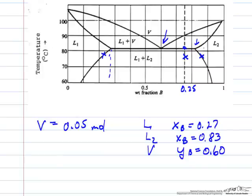Now we need to determine the amounts of these phases. We've determined the composition, so I might call this XB in phase 1 and in phase 2, and then YB is in the vapor, and there's only one vapor phase.